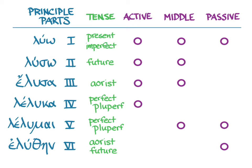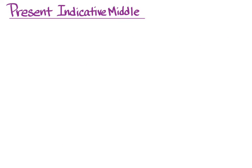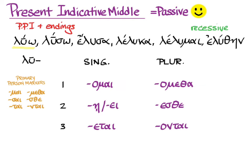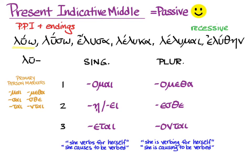The good news is that the middle forms from the first principal part are identical with the passive forms of the present and imperfect, and the middle forms from the fifth principal part are identical with the passive of the perfect and pluperfect. So to form the present indicative middle, you remember the present indicative passive — and you know those forms already. First principal part, primary middle/passive person markers, recessive accent. The default translation in the middle is 'she verbs for herself' or 'she causes to be verbed' for simple aspect, or 'she is verbing for herself' or 'she is causing to be verbed' for progressive/repeated aspect.